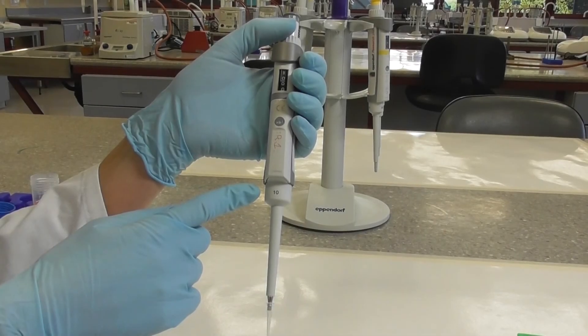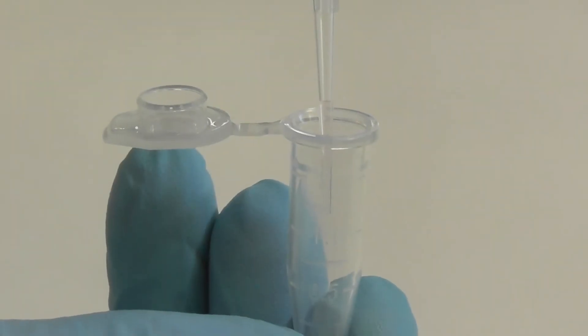When pipetting small volumes such as 10 microliters, a good technique is to observe the volume in the tip after withdrawing your liquid and watch that it is cleanly dispensed into your vessel.